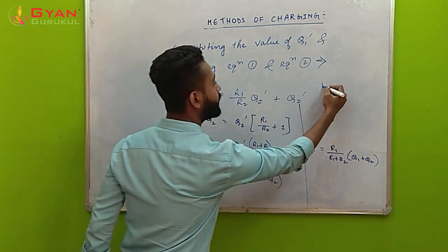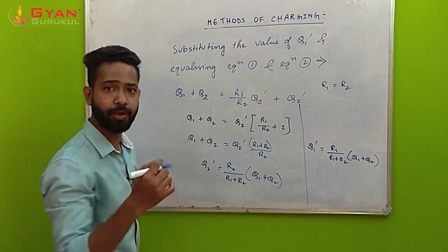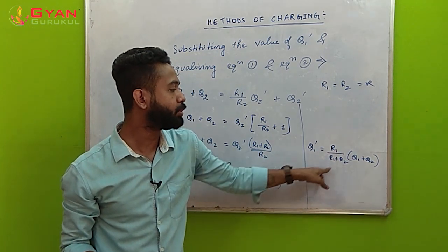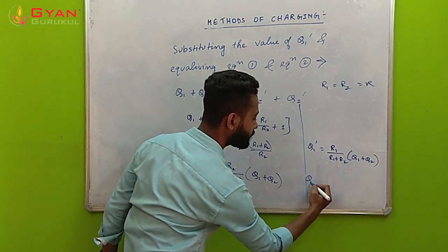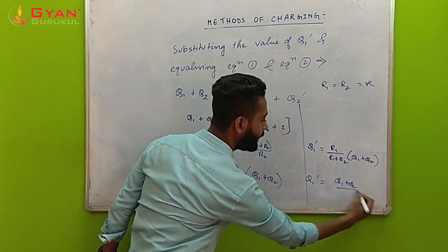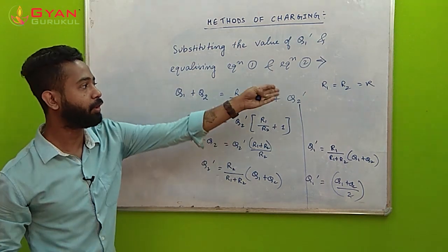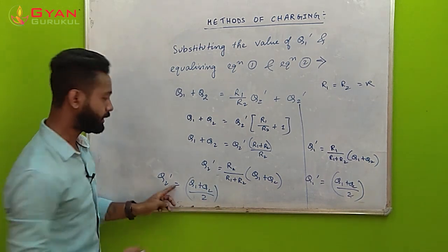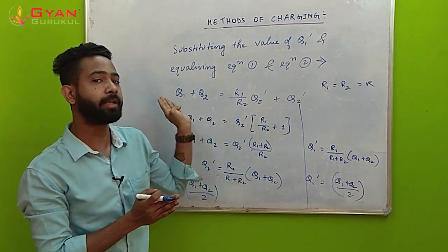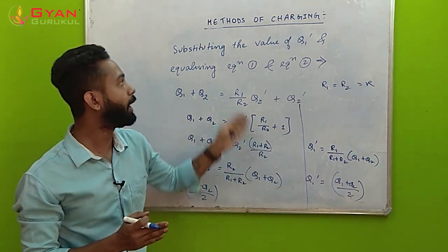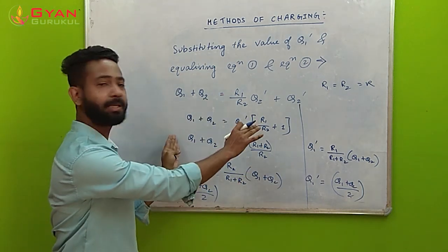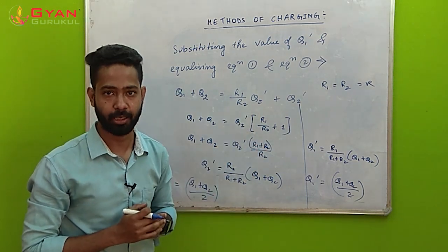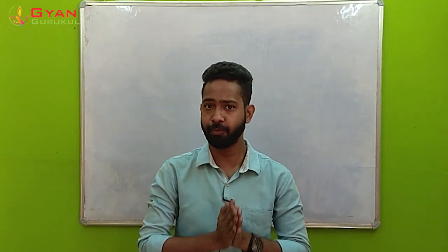Had the spheres been identical, R1 = R2 = R. Substituting into the formula: Q2' = R/(R + R) × (Q1 + Q2) = R/2R × (Q1 + Q2) = (Q1 + Q2)/2. Similarly Q1' = (Q1 + Q2)/2 — the same value, which matches the simplest case we did earlier. That is all you need to know about charging by conduction. Once these formulas and concepts are in your head, you can do any numericals based on this topic.